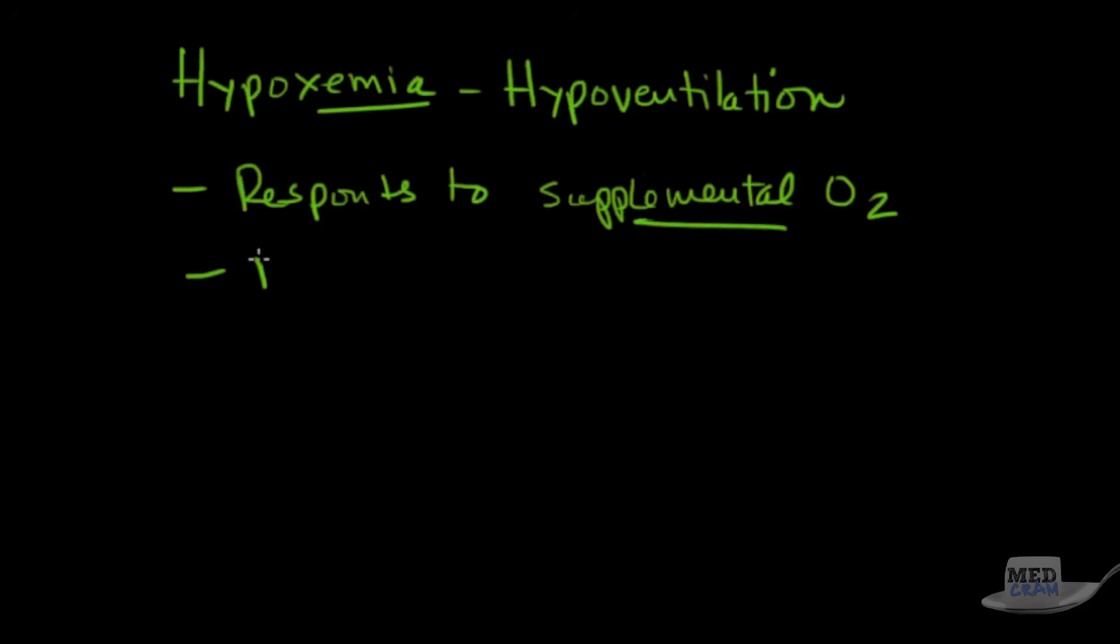You've got a normal capital A lowercase a gradient. The other one that had a normal gradient so far is the high altitude. Remember that diffusion had an increased AA gradient.